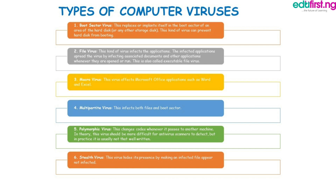Next is the polymorphic virus — this changes its code whenever it passes to another machine. In theory this virus should be more difficult for antivirus scanners to detect, but in practice it is usually not that well written. The final type for this class is the stealth virus. The stealth virus hides itself by making an infected file appear not infected, so it is a very dangerous virus and is not usually recognizable because it hides its presence.